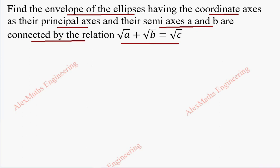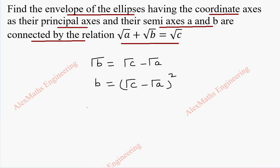From the given relation, √B = √C − √A. Squaring both sides, B = (√C − √A)². Our ellipse equation is x²/A² + y²/B² = 1.